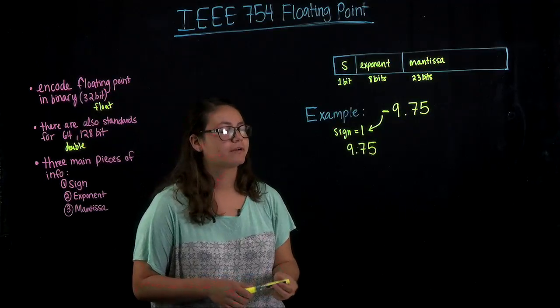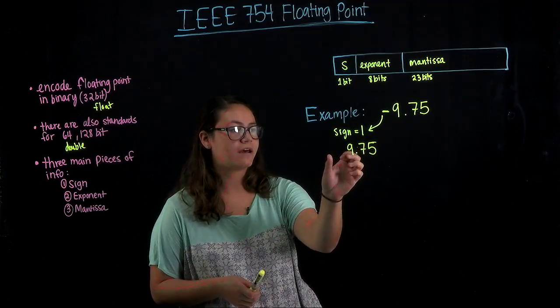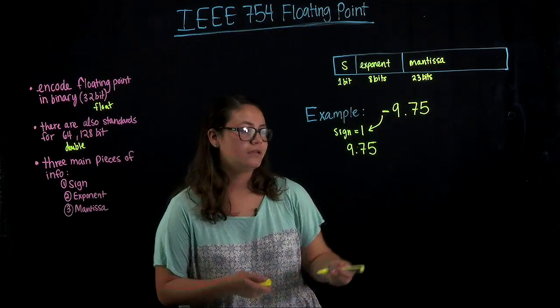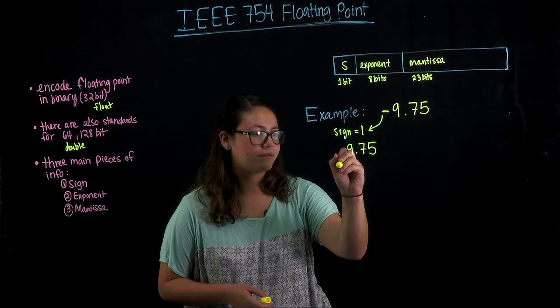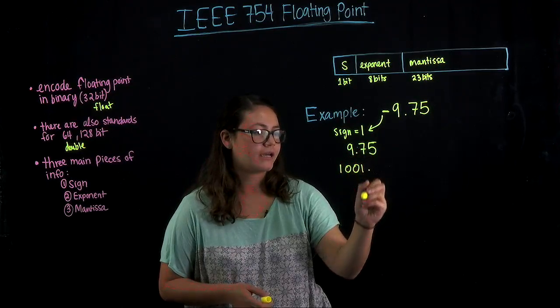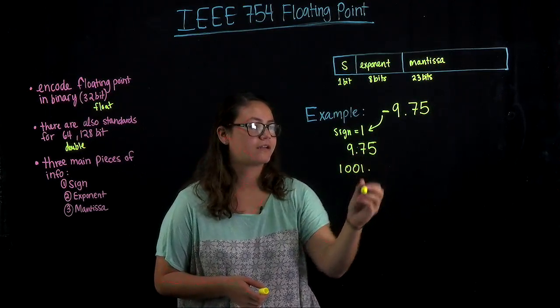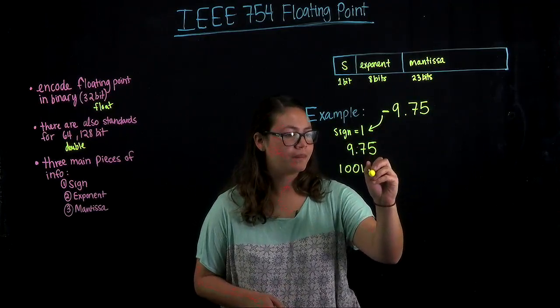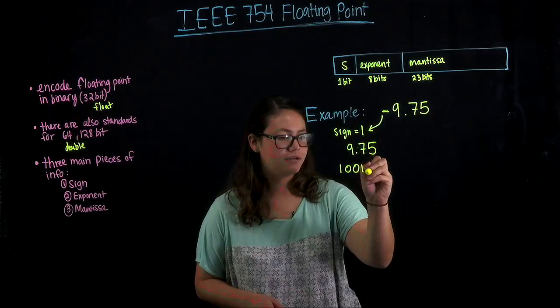The first step that we want to do is convert both sides of the decimal point into binary. So the left side is going to be 1, 0, 0, 1 for 9.